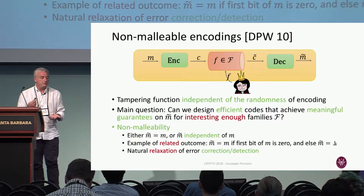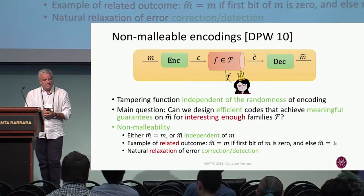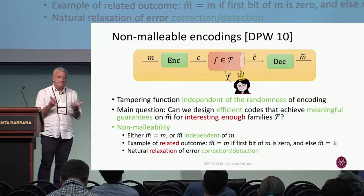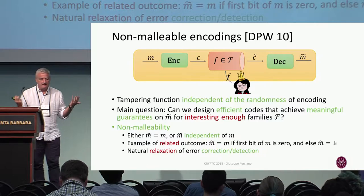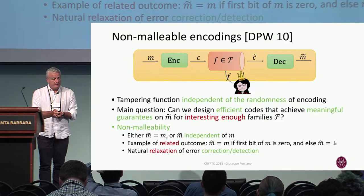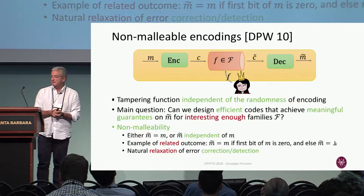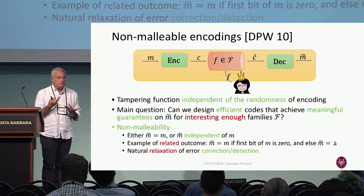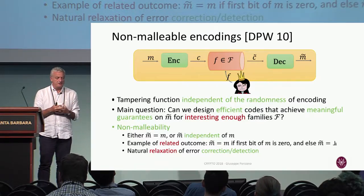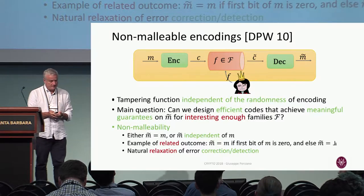Or, the adversary could take an encoding of M and produce an encoding of M plus one. Of course, as pointed out in the previous talk, if you allow the adversary to do anything, then since this is a keyless primitive, it could just decode and re-encode a related message. So we are trying to identify a significant family of tampering functions F which is interesting enough that we can do something meaningful.